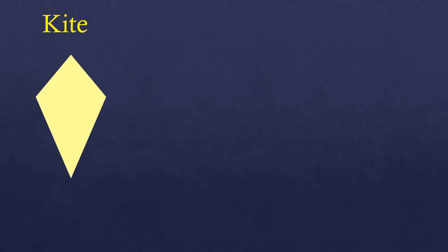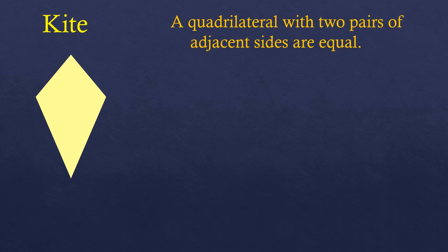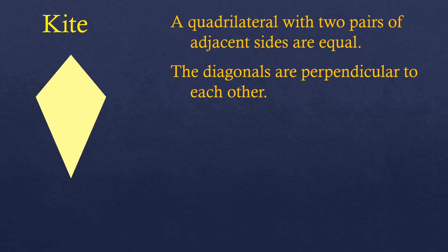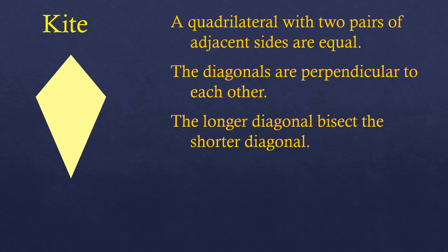Now let's talk about the kite. A kite is not a parallelogram because it doesn't have any parallel opposite sides. Unlike the trapezoid, which has at least one pair of parallel sides, a kite is simply a quadrilateral. However, it has two pairs of adjacent sides which are equal — the two top sides are congruent, and the two bottom sides are congruent. The diagonals are perpendicular to each other, forming a 90-degree angle at intersection, and the longer diagonal bisects the shorter diagonal.